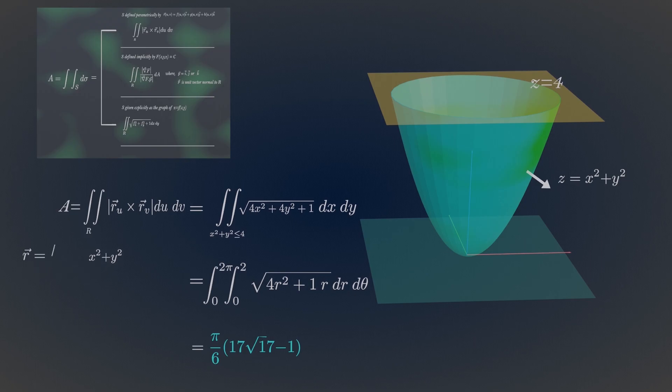First, parameterize the parabola. Now partial differentiate it. Now calculate the cross product of these two vectors.